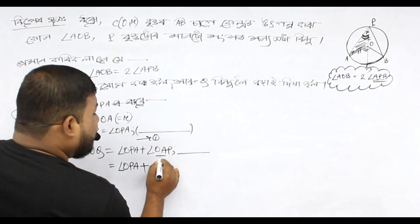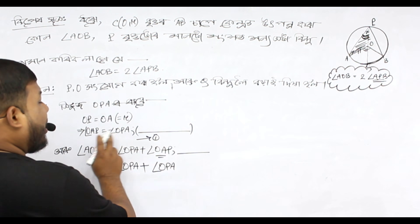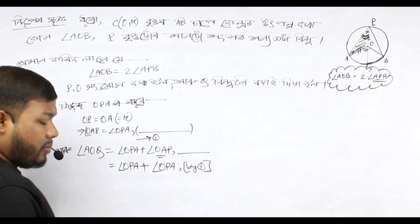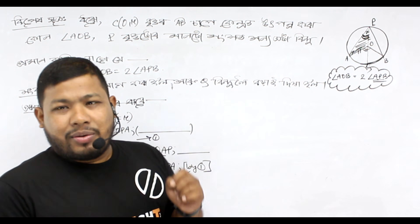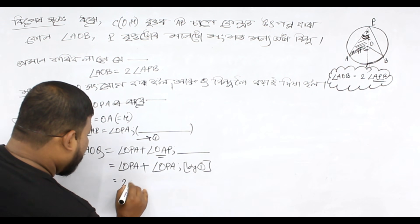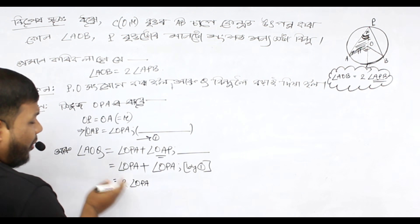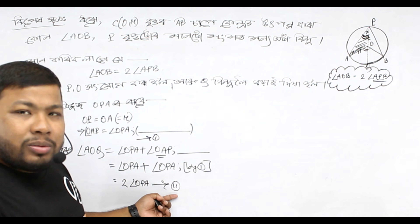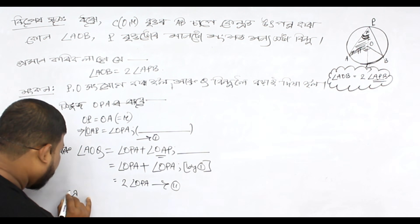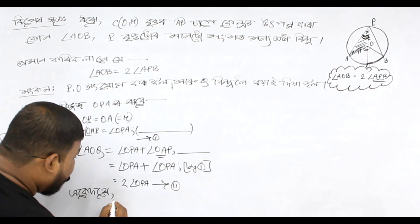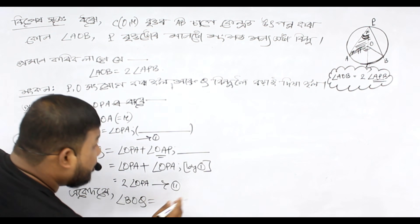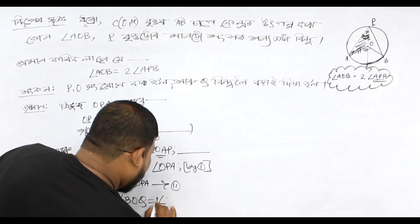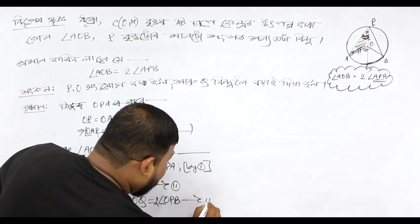Angle OAP — we replace OPA in equation one. Using equation one on the right side, we finally get twice OPA. So twice OPA gives us equation number two. Similarly, for triangle BOQ, we can directly write: angle BOQ is equal to twice OPB. This gives us equation number three.